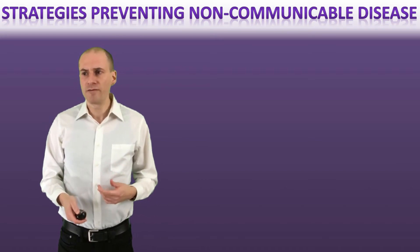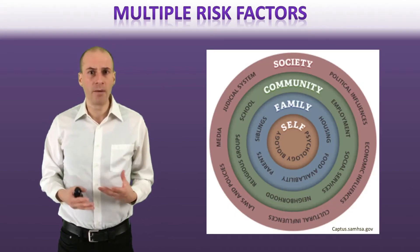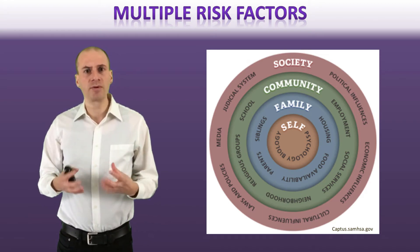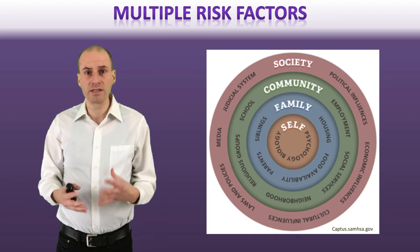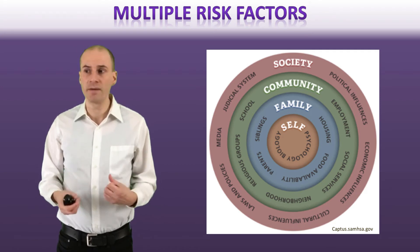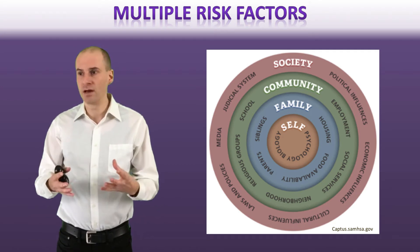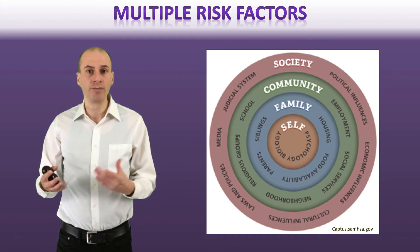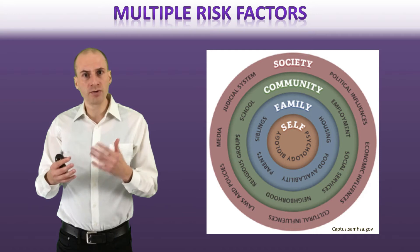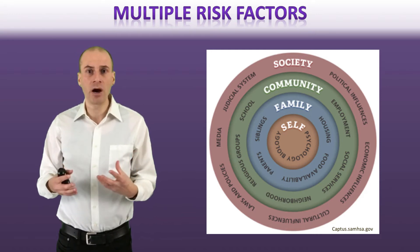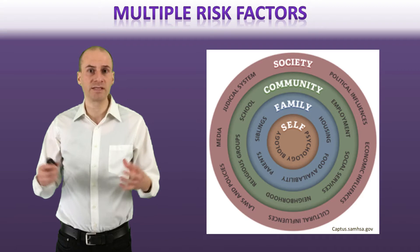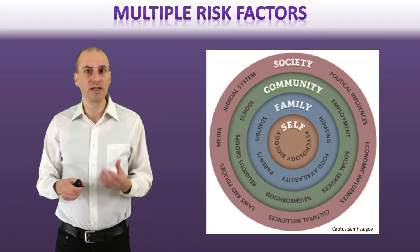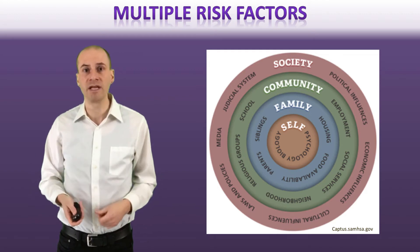We'll start off by talking about multiple risk factors. When we think about non-communicable diseases, there are actually a range of different things that could potentially be causing them. We can look both at the self level, the family level, community level, or society level. Understanding how those different factors relate can help us identify the multiple risks that combine to increase risk for disease, because very often it isn't just a single thing — it's multiple things working in combination.